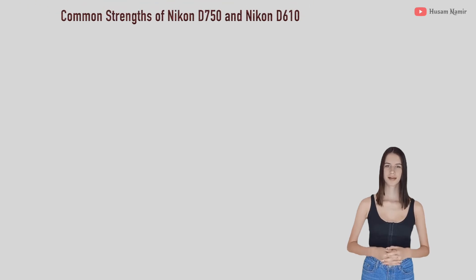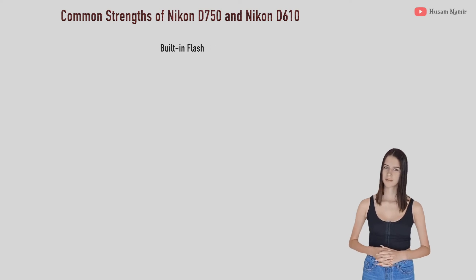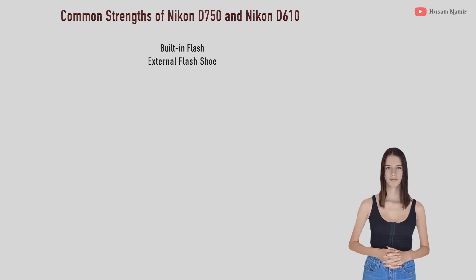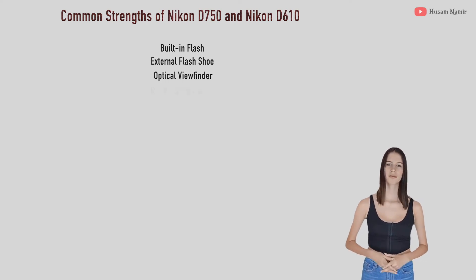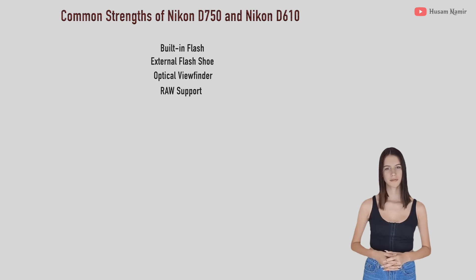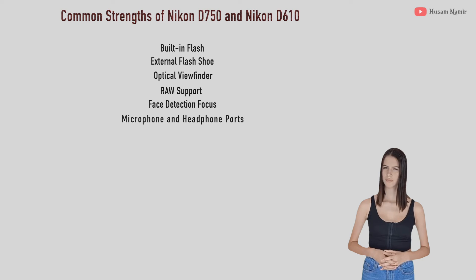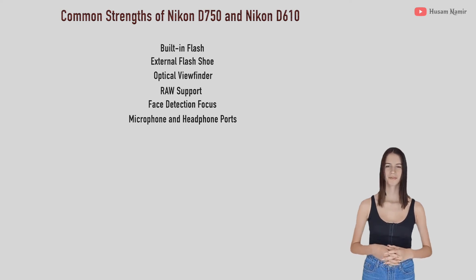Now we will talk about common strengths of Nikon D750 and Nikon D610. Both of them have built-in flash and an external flash shoe. Both of them have an optical viewfinder, raw support, face detection focus, and microphone and headphone ports. Both of them also have an environmental sealing body.